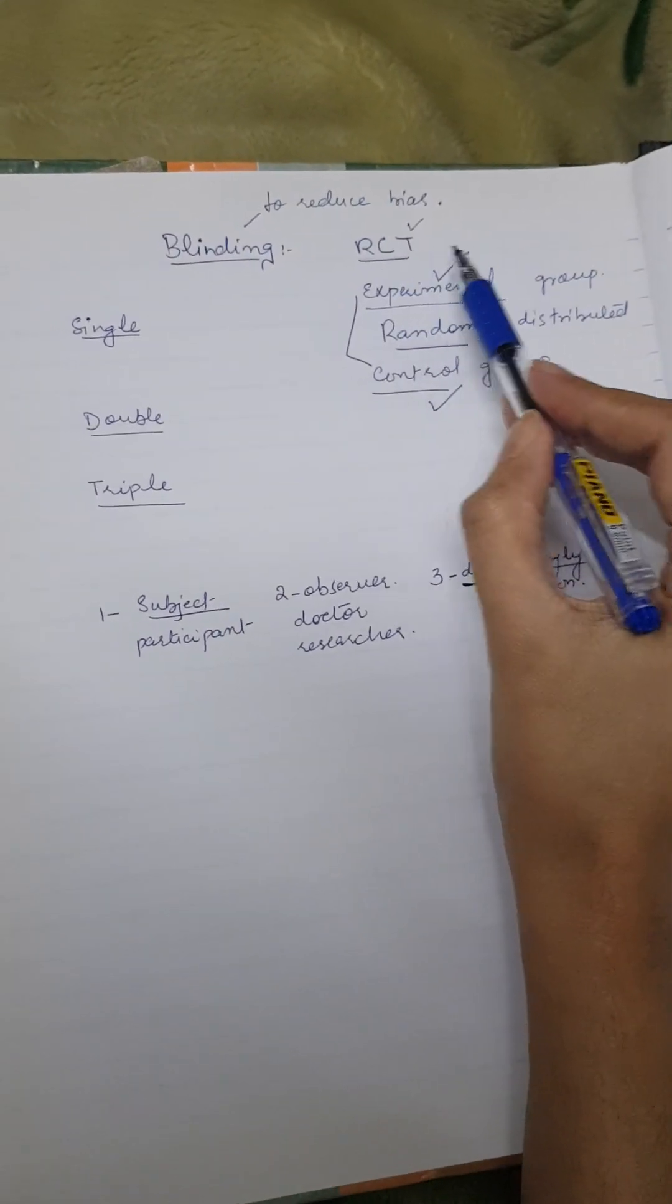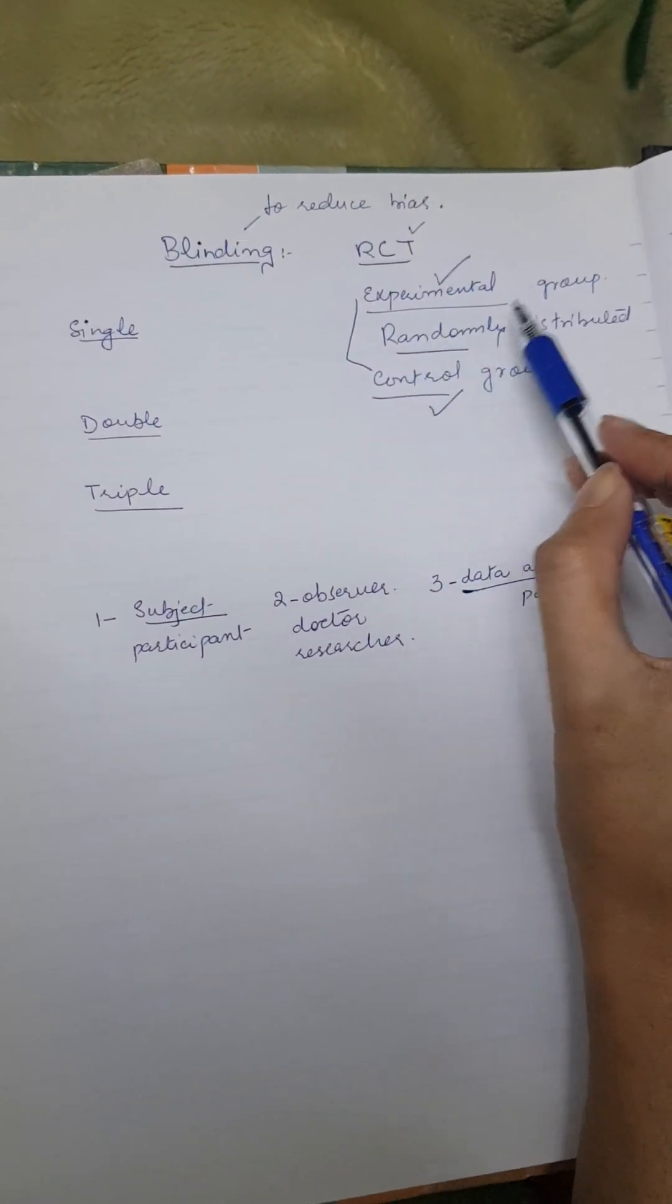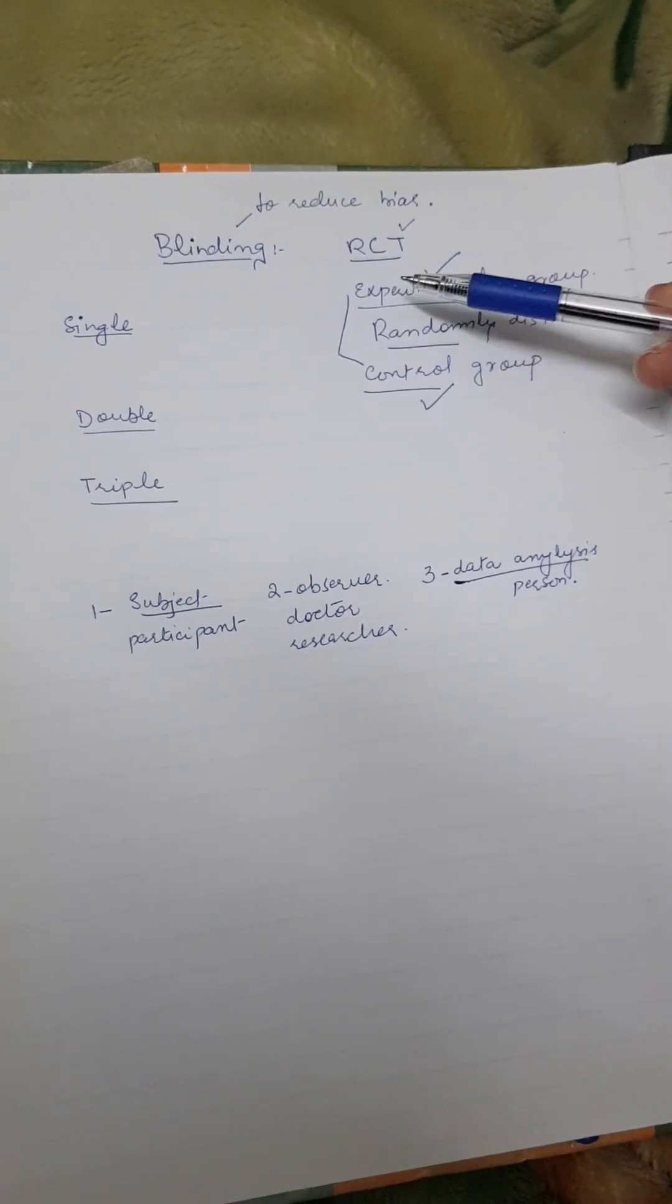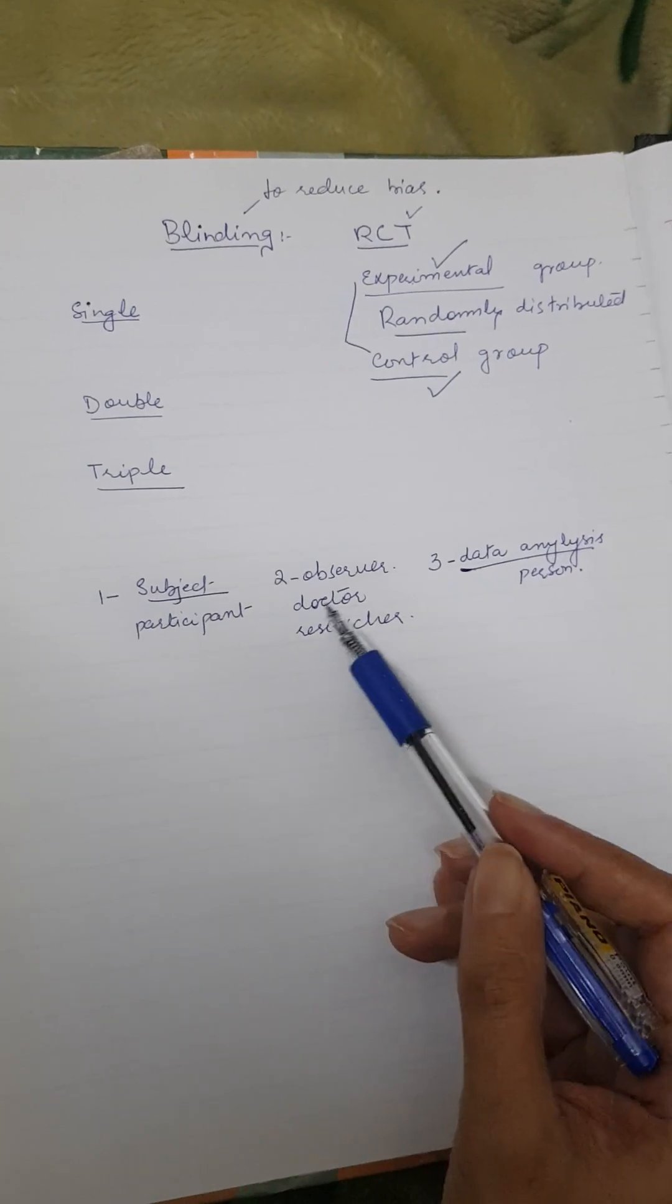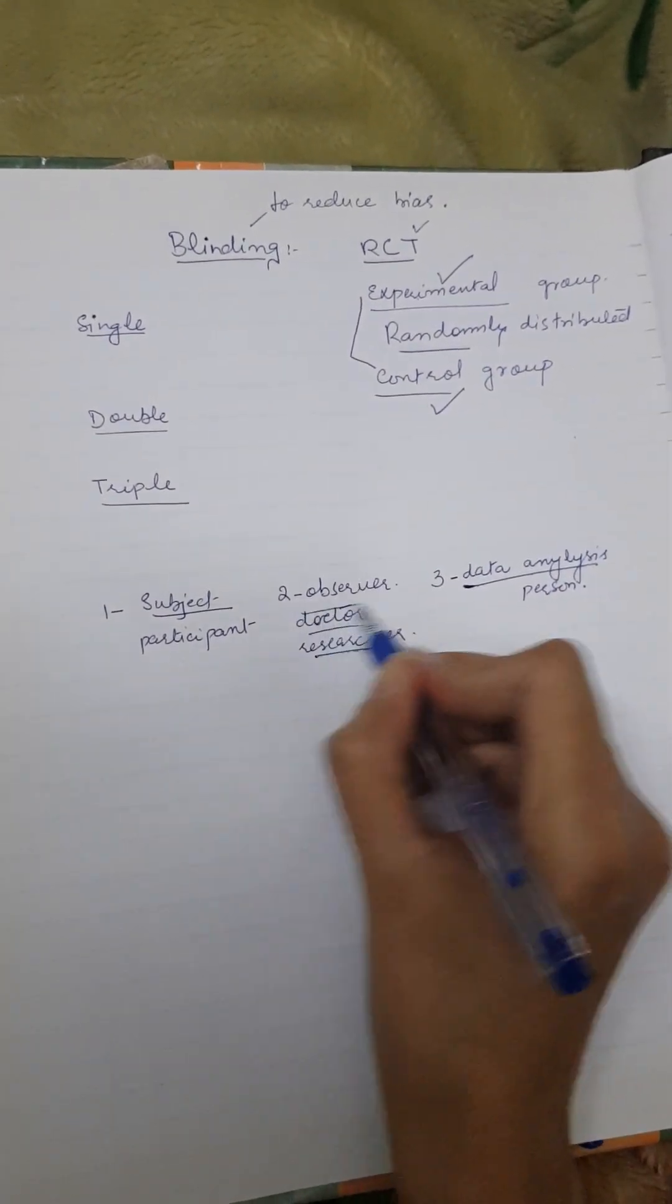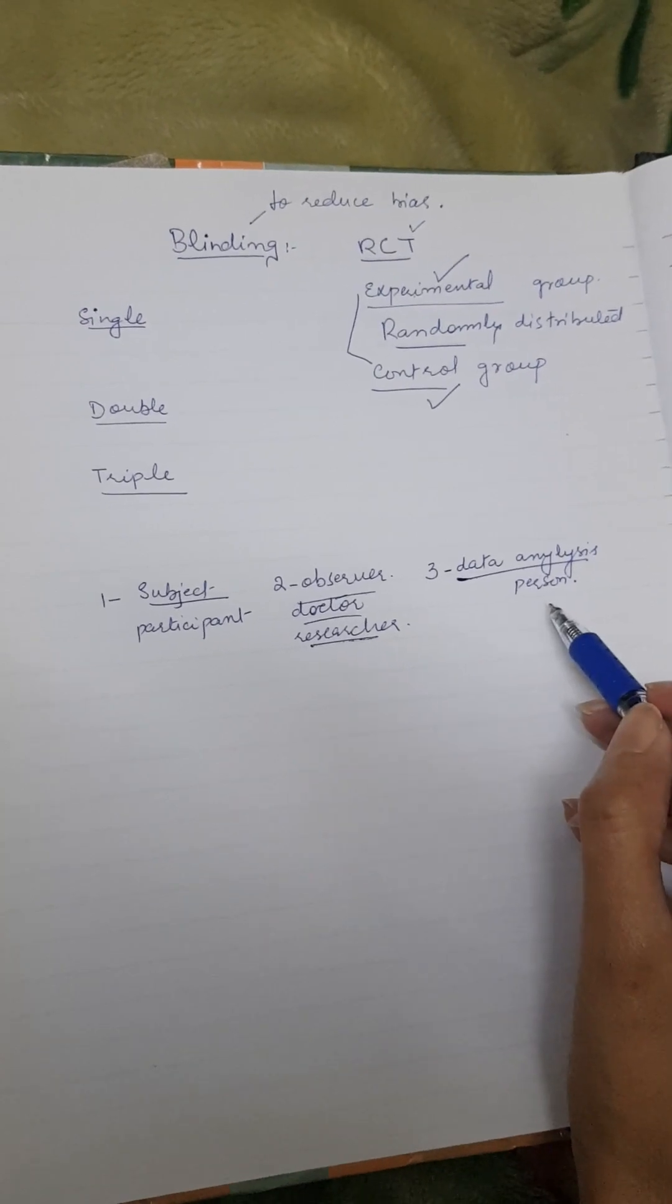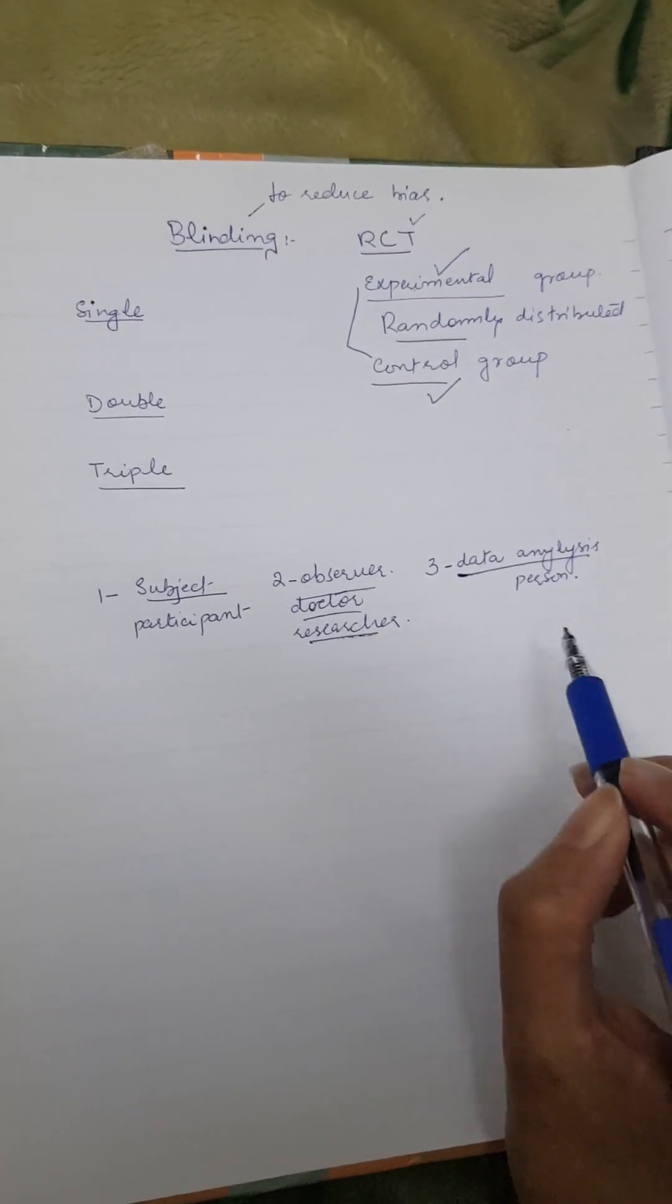In any randomized control trial, a true clinical trial experimental study, we have the subject, the participants who are randomly distributed between the experimental and the control group. Then we have a researcher, a doctor or observer. Then we have a person who at the end of the research is going to analyze the whole data.